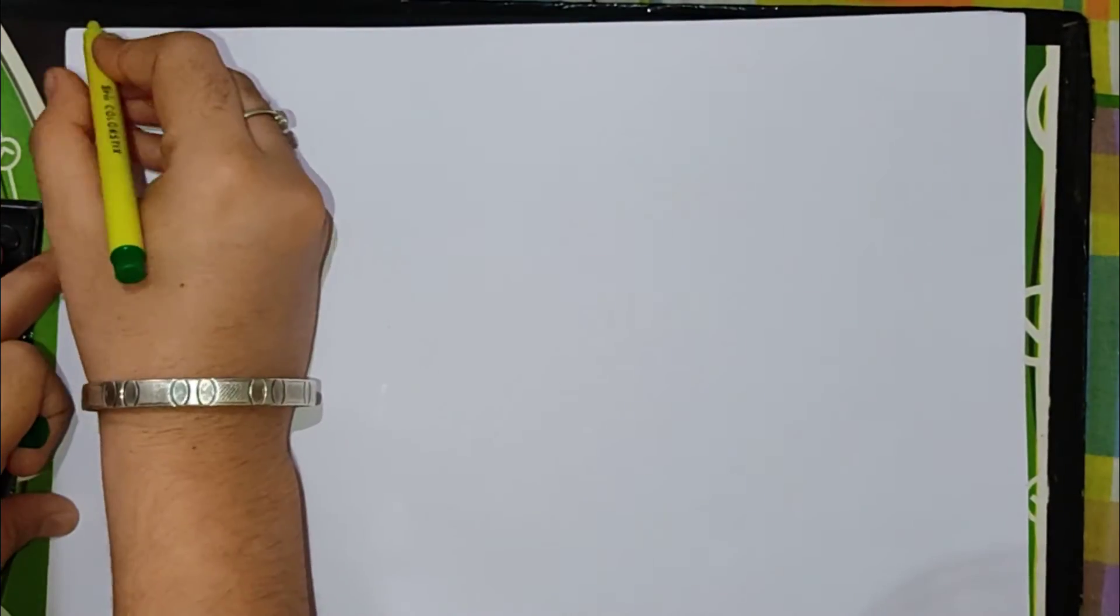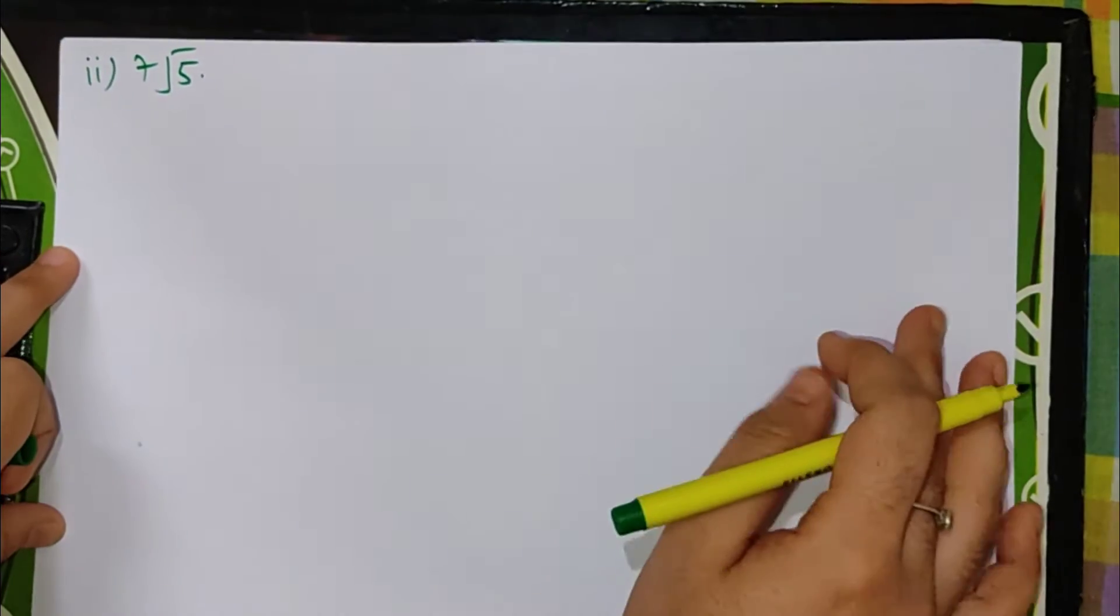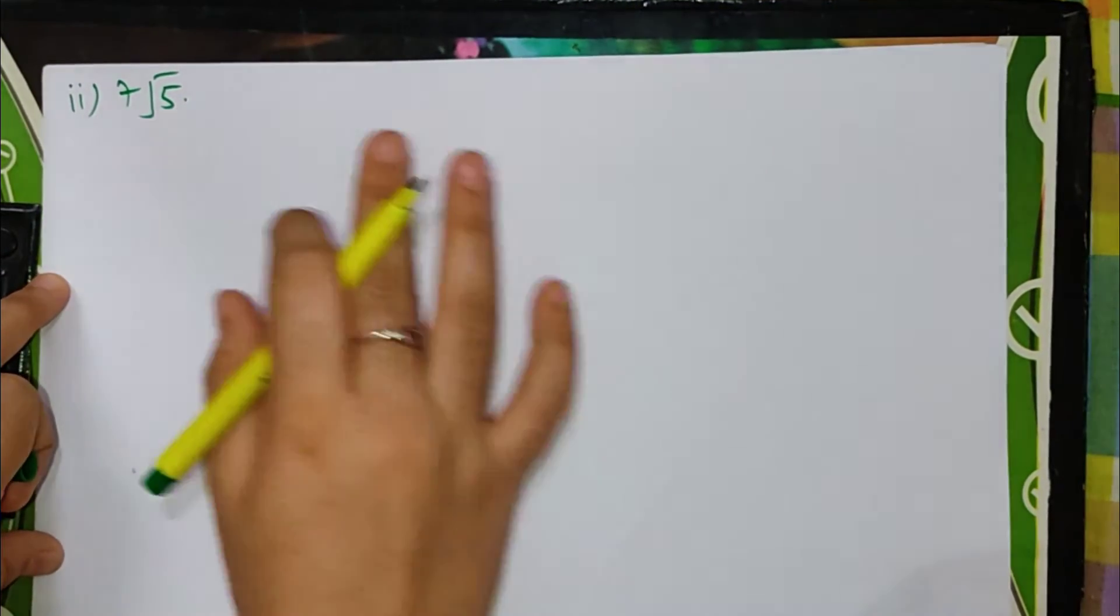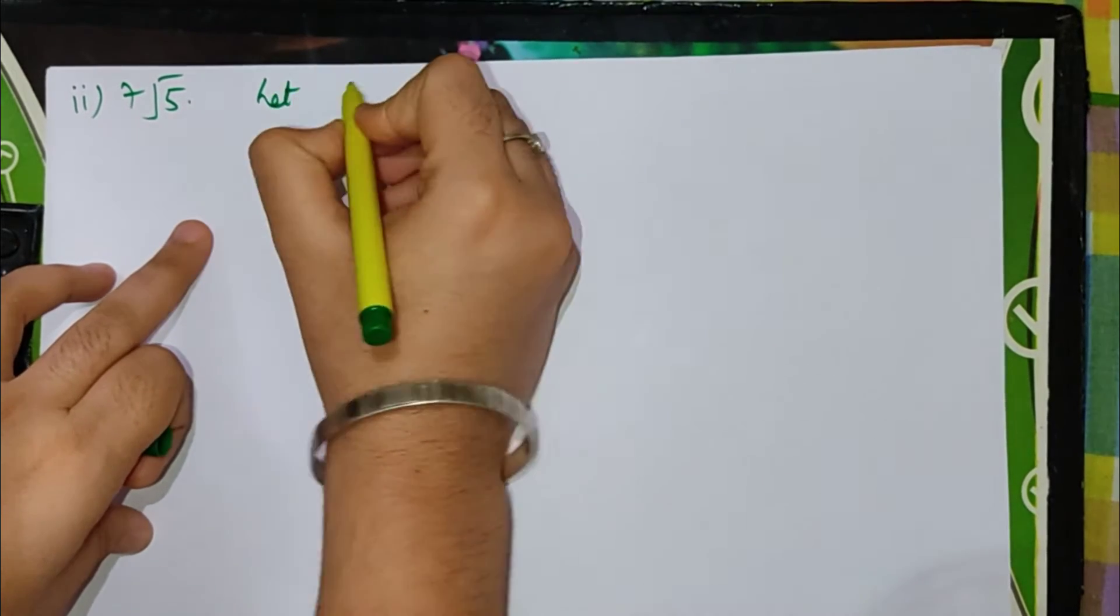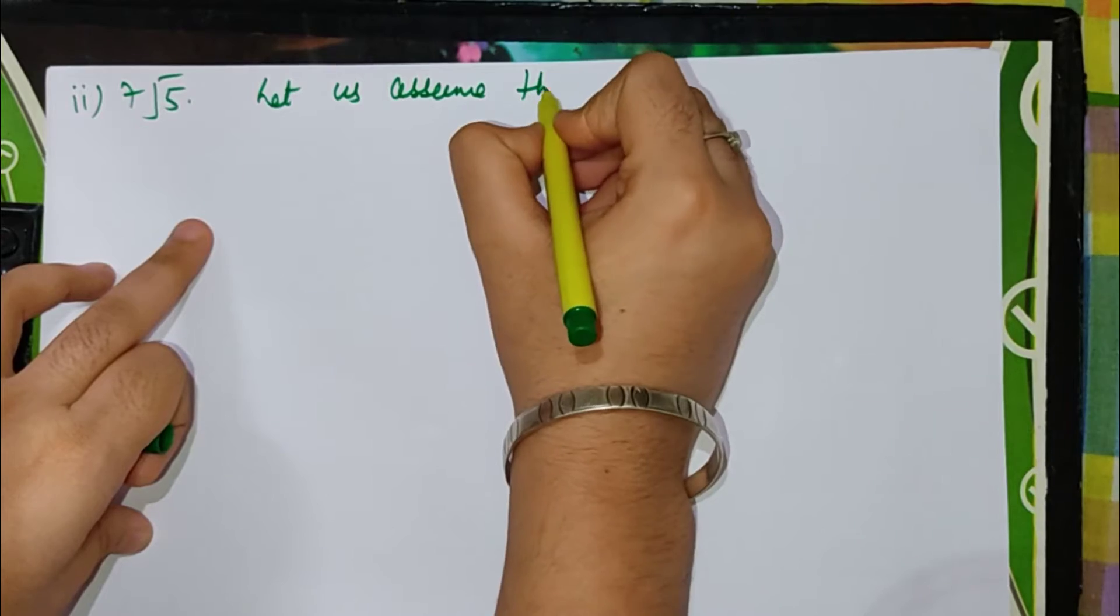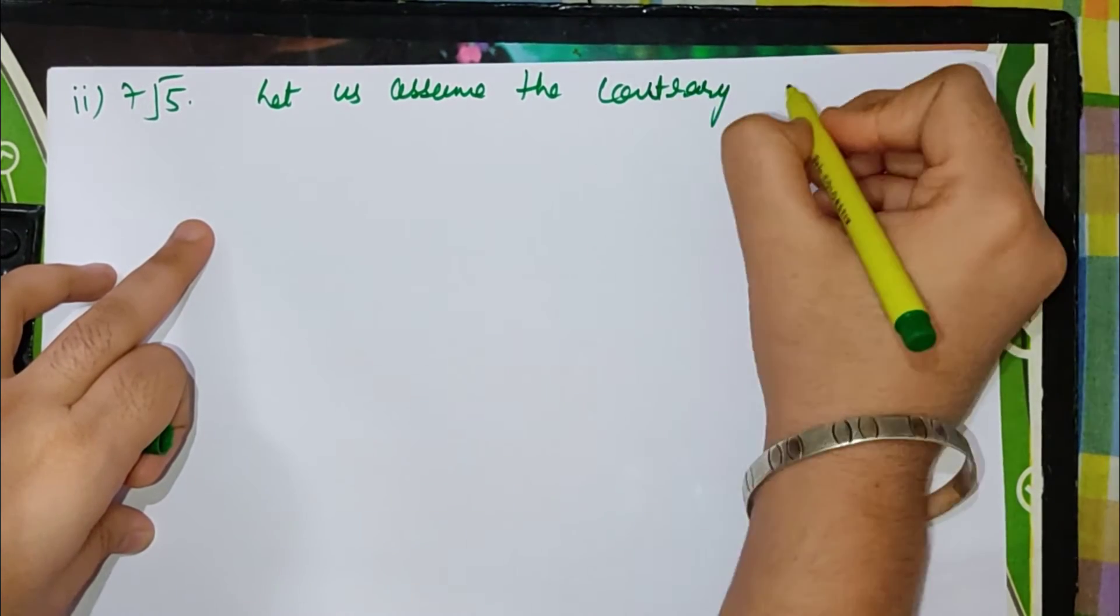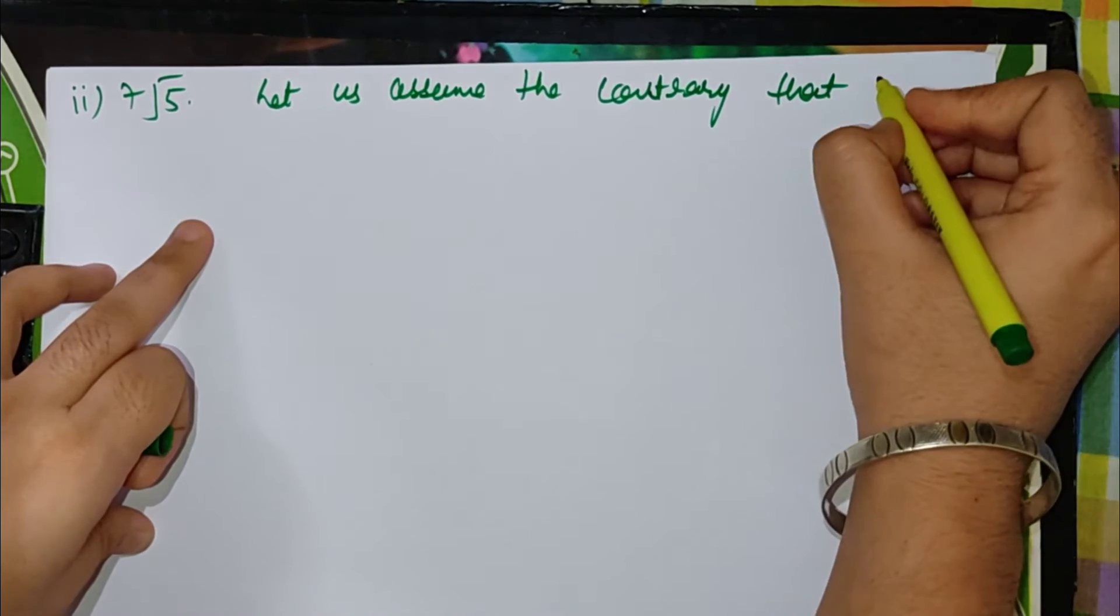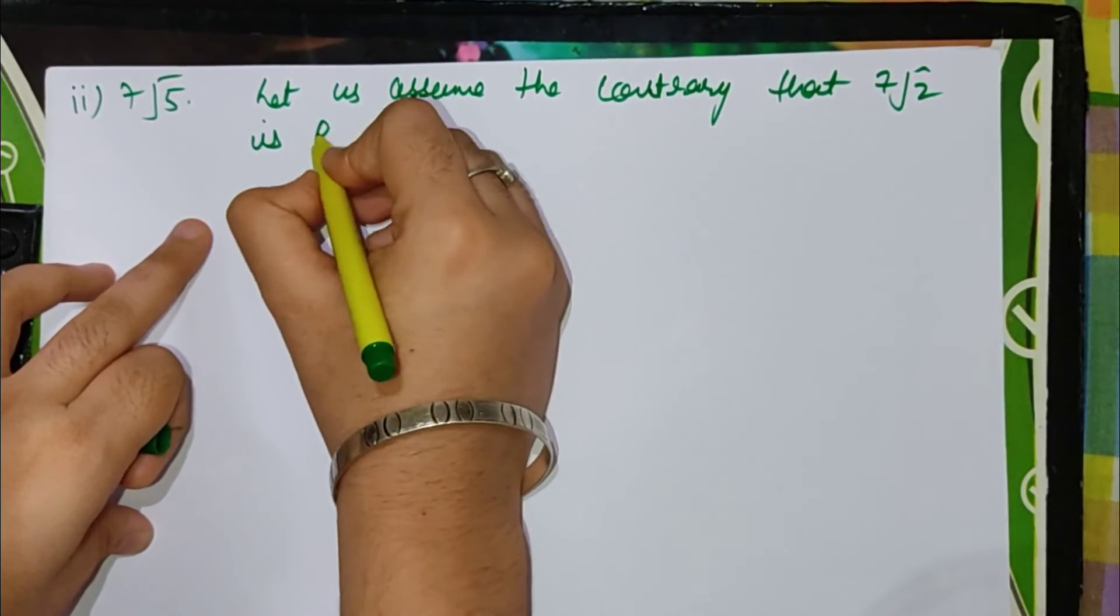The second part is 7 root 5. We will also solve it like the previous one. Let us assume the contrary that 7 root 5 is rational.